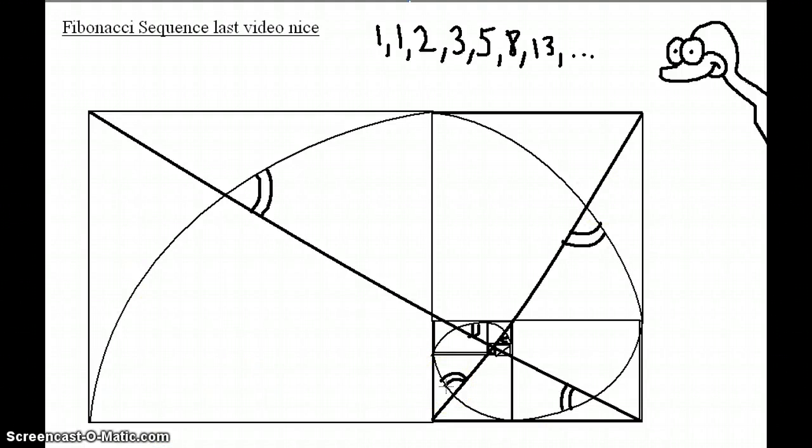And that relates to fractals, in a way, which could be another video. Fractals are these interesting shapes that when you zoom in on them, they actually look the exact same. They produce the same image if you zoom in on them by a constant factor. In the case of the Fibonacci, or the golden spiral, it would be a factor of 2π. So that's an interesting thing as well.